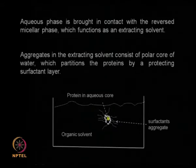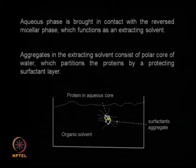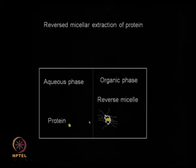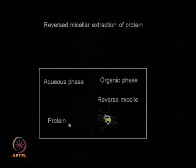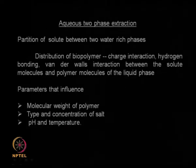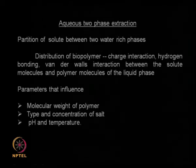This is what the aqueous two-phase extraction system is, as against a normal solvent-solvent extraction. Normal solvent-solvent extraction systems are generally used for small molecules, whereas we use the reverse phase micellar system for proteins. Another system we talked about is aqueous two-phase extraction, meaning you are extracting your desired protein from another aqueous medium using water. So both liquid systems are water — and here you use something called a biopolymer.